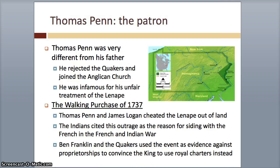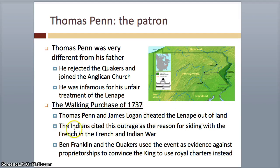Thomas Penn was different from his father — he rejected the Quakers, unlike William Penn. He was infamous for his unfair treatment of the Lenape. The most famous thing is the Walking Purchase of 1737, where he actually cheated the Lenape out of their land. That's why the Indians sided with the French in the French and Indian War. Ben Franklin and the Quakers used the evidence against proprietorships to convince the king to use royal charters instead.